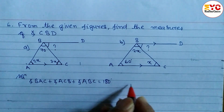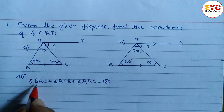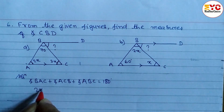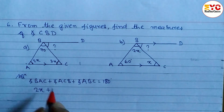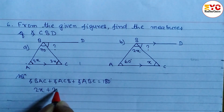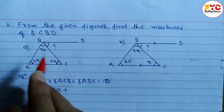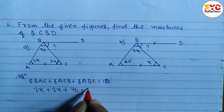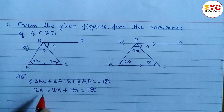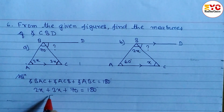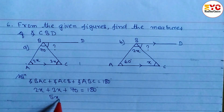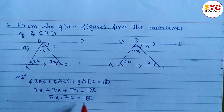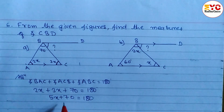The reason is the sum of angles of a triangle equals 180 degrees. So what is the value of angle BAC? It is 2x. So we write 2x plus angle ACB, which is 3x, plus angle ABC which is 70 degrees, equal to 180 degrees. When you add these two like terms we get 5x plus 70 is equal to 180.